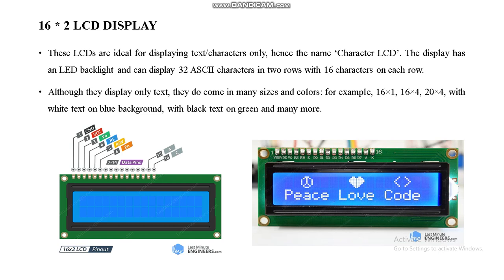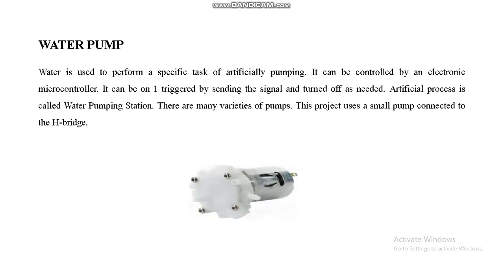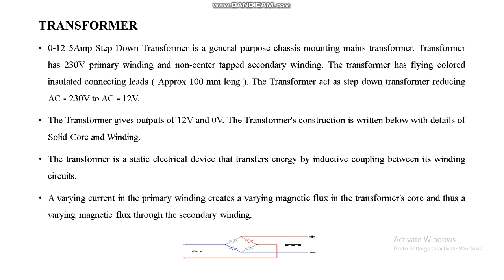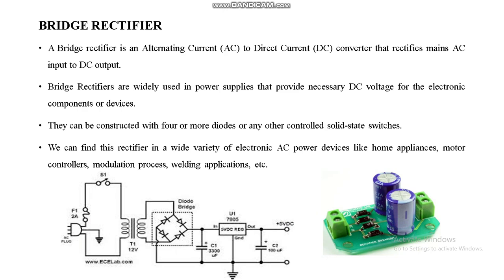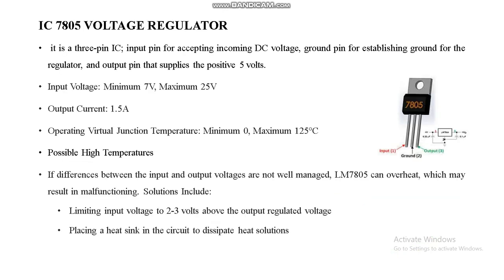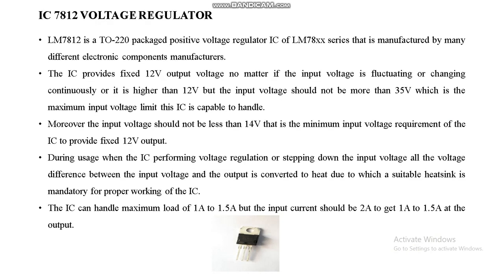The LCD display shows instructions, temperature readings, and sanitization status messages. A water pump spreads the sanitizer. A 230V to 12V step-down transformer is used in the power supply unit. A bridge rectifier converts AC to DC. A 7805 voltage regulator provides 5V, and a 7812 voltage regulator provides 12V.